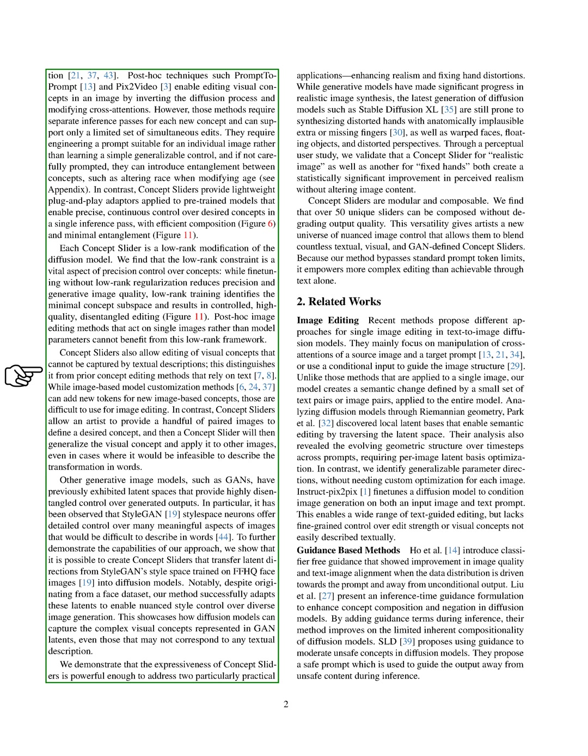Other generative image models, like GANs, have previously shown latent spaces that provide highly disentangled control over generated outputs. In particular, it's been observed that StyleGAN style-space neurons offer detailed control over many meaningful aspects of images that would be hard to describe in words. To further demonstrate our approach, we show that it's possible to create concept sliders that transfer latent directions from StyleGAN style-space trained on FFHQ face images into diffusion models. Despite originating from a face dataset, our method successfully adapts these latents to enable nuanced style control over diverse image generation, showcasing how diffusion models can capture complex visual concepts represented in GAN latents, even those that may not correspond to any textual description.